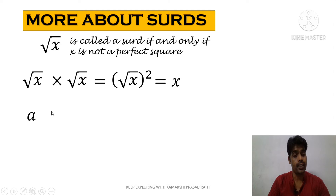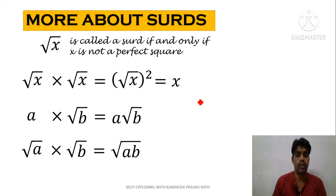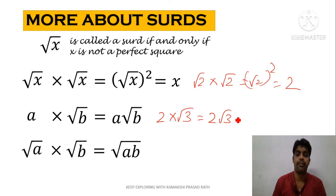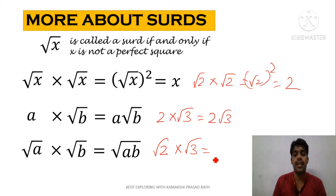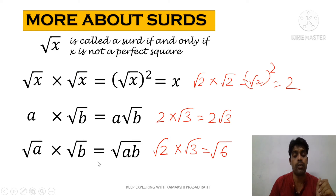Let's see some more about surds. Suppose a is a whole number and root b is a surd, so a times root b gives a root b. Suppose root a and root b are two surds — when we multiply them we get root ab. For example: root 2 times root 2 gives root 2 whole squared, which equals 2. Two times root 3 gives 2 root 3. Root 2 times root 3 gives root 6. These basic concepts you have to remember when converting surds into whole numbers.